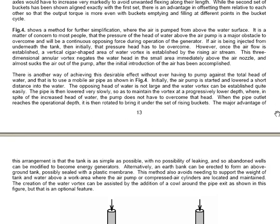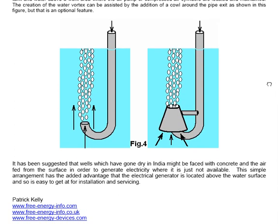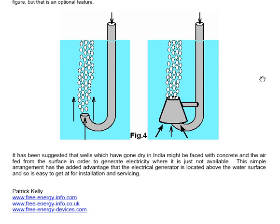It is not a bad idea to have a cowl which concentrates the flow of water and air as an upward stream going into the buckets. It has been suggested that wells which have gone dry in India might be faced with concrete and the air fed from the surface in order to generate electricity where it is just not available. This simple arrangement has the added advantage that the electrical generator is located above the water surface and so it is easy to get at it for both installation and servicing.